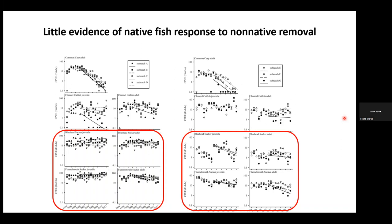To summarize the work prior to 2016: we found consistent common carp declines across all reaches but mixed or little response of channel catfish and native species to non-native fish removal efforts. We acknowledged this as a retrospective analysis without an experimental design, which likely made the assessment difficult to interpret.